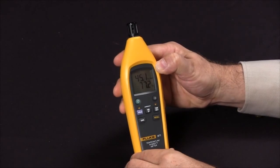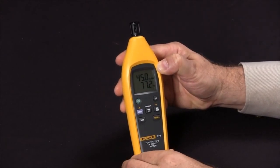And these are the key features of the Fluke 971 temperature and humidity meter.